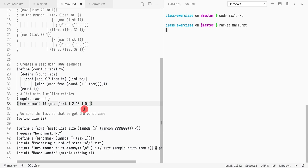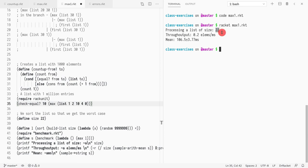And the list only has 22 elements, but we're running it multiple times just so we can take an average. What we see is a list with 22 elements takes 100 milliseconds to compute the maximum number.